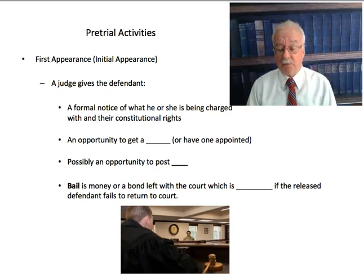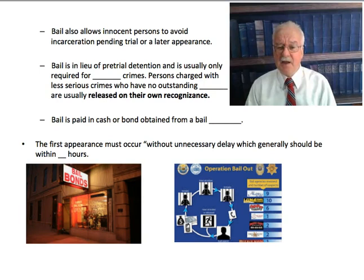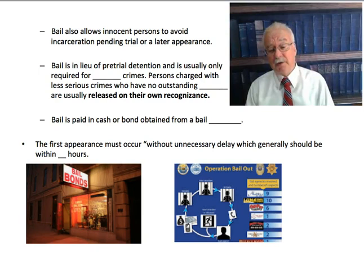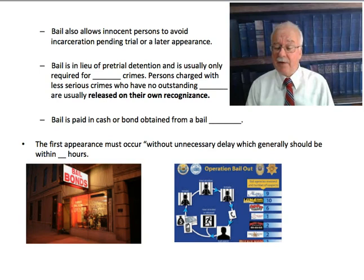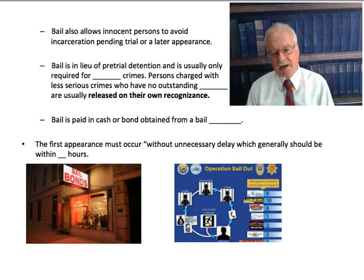There's also possibly an opportunity to post bail. Bail is money or a bond left with the court, which is forfeited — taken by the court, not returned to the defendant — if the released defendant fails to appear in court on the next due date. Bail also allows innocent people to avoid incarceration pending trial. Bail is in lieu of pretrial detention, which is usually only required for serious crimes. Persons charged with less serious crimes who have no outstanding arrest warrants are usually released on their own recognizance, called being ROR'd. The judge says come back for the next hearing; if you don't, I'll issue an arrest warrant and you'll be held in contempt of court. Most people are ROR'd; more serious crimes or flight risks usually have to post bail, or they're not released at all.